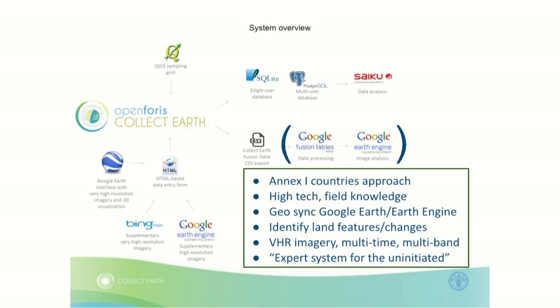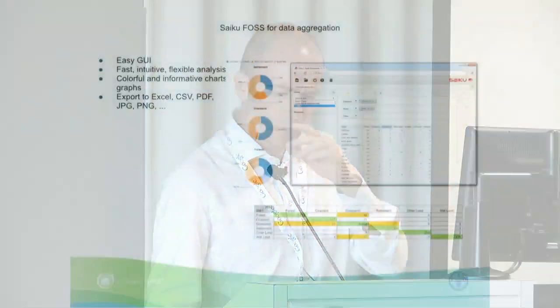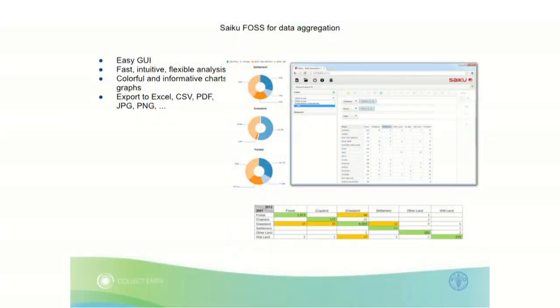This is a system of applications: Google Earth for very high resolution data, Earth Engine, and in the background either SQLite or PostgreSQL for data storage. But all this is a flat table, so in order to actually analyze the data, we connect it to another free and open source software called Saiku — a sort of pivot table like Excel, but on steroids. From here, we can have aggregation charts and export these charts and aggregations in several formats. For example, this is a land use change matrix for a country.